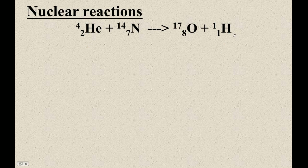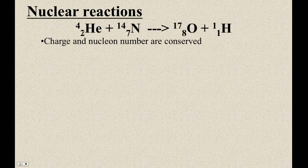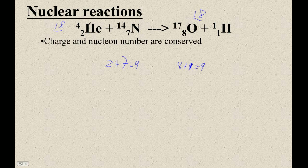Let me show you something. When we do this, the charge and the nucleon number are conserved. The proton number: 2 plus 7 is 9, and 8 plus 1 is 9. On the top: 14 plus 4 is 18, and 17 plus 1 is 18. So these things are deadly simple to balance — these numbers add up on both sides of the equation.